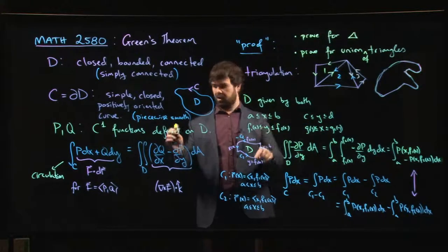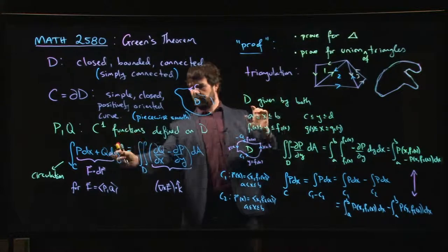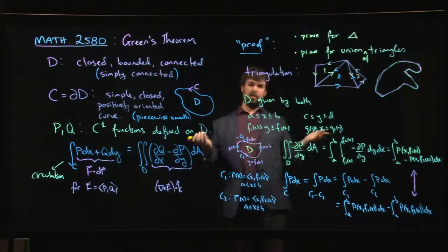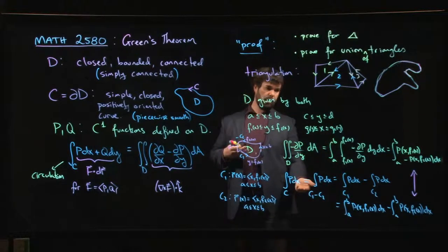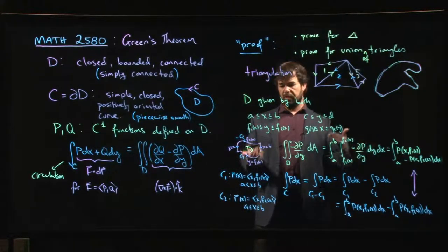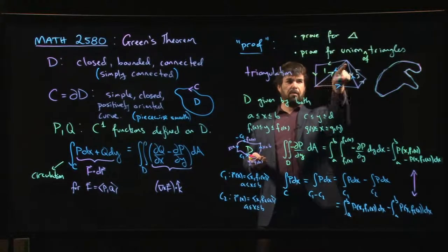So the catch is that you need to be able to describe your region simultaneously with both of these descriptions, right? Because you're going to need to use one description for the p dx part. You're going to need to use the other description for the q dy part, right? And so then you worry about, okay, yeah, there's lots of regions that can't be described in both ways. Sometimes it's only one way. But we also, we know what to do, right?